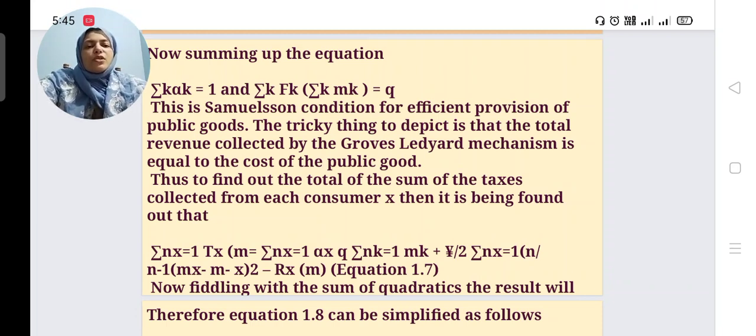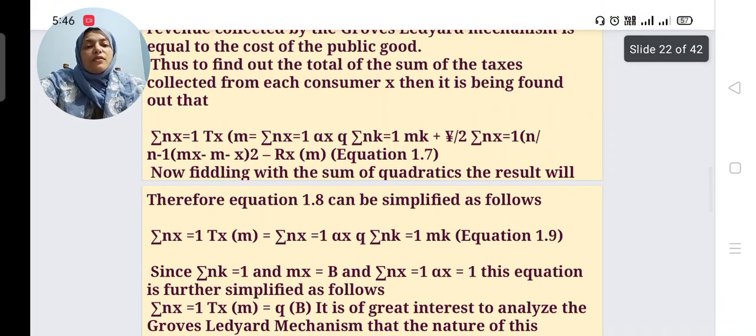Then function of m = Σ(x=1 to n)[αx·q·Σ(k=1 to n)mk] + 1/2 × Σ(x=1 to n)[n/(n-1) × (mx - m̄(-x))²] + r(x)(m). Now this equation is considered as equation 1.7. Now fiddling the sum of the quadratics, the result will be